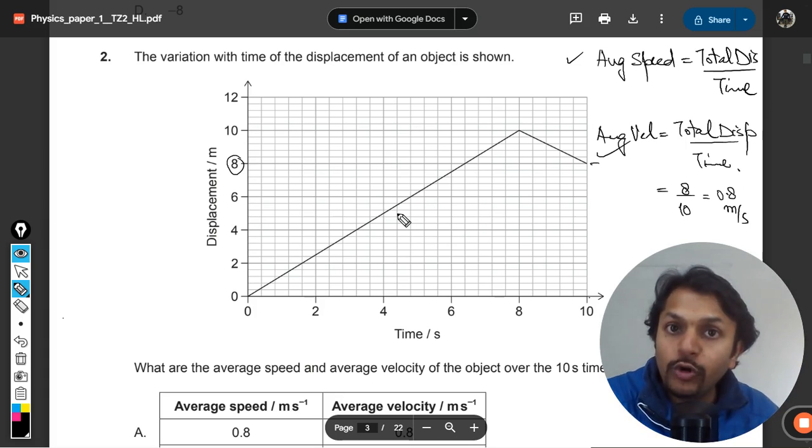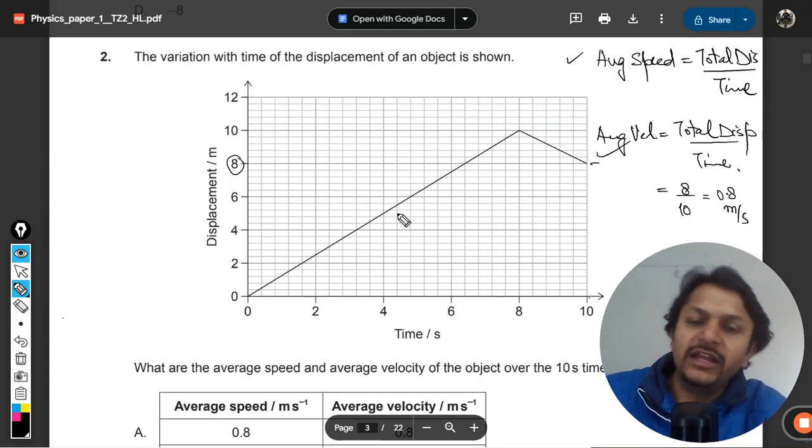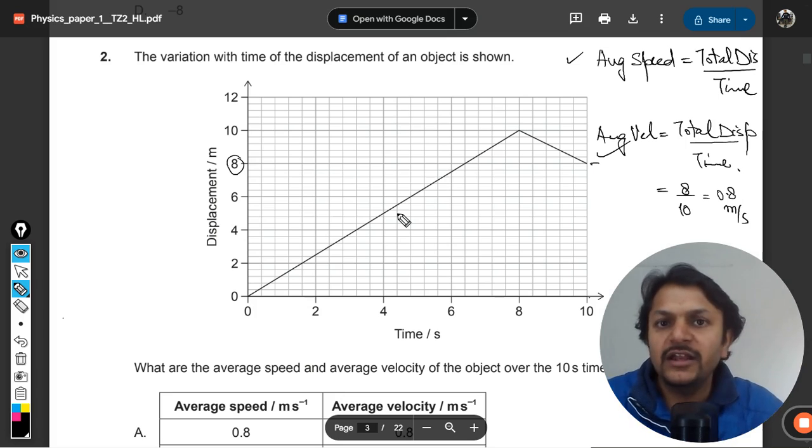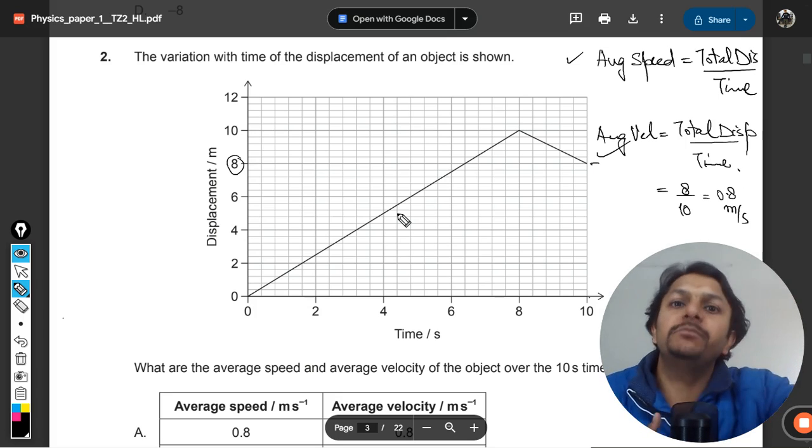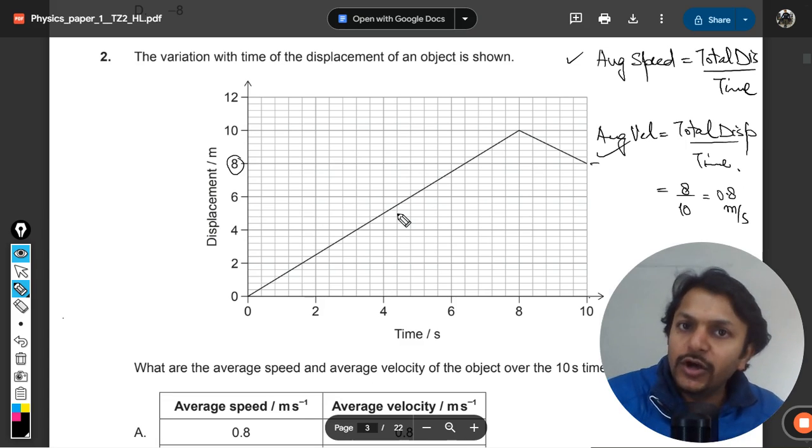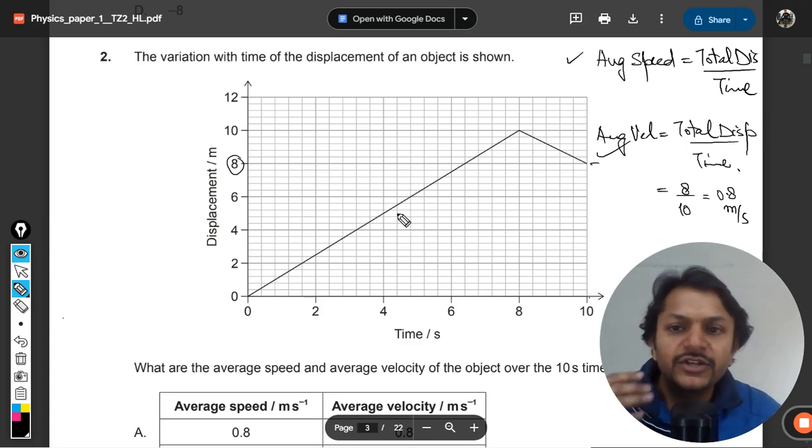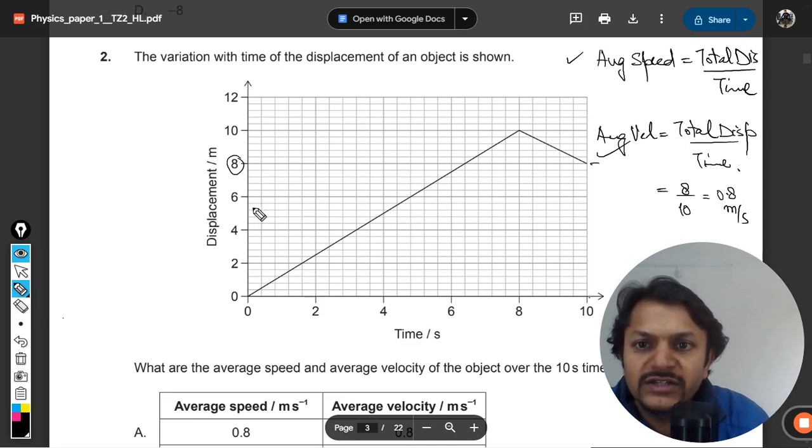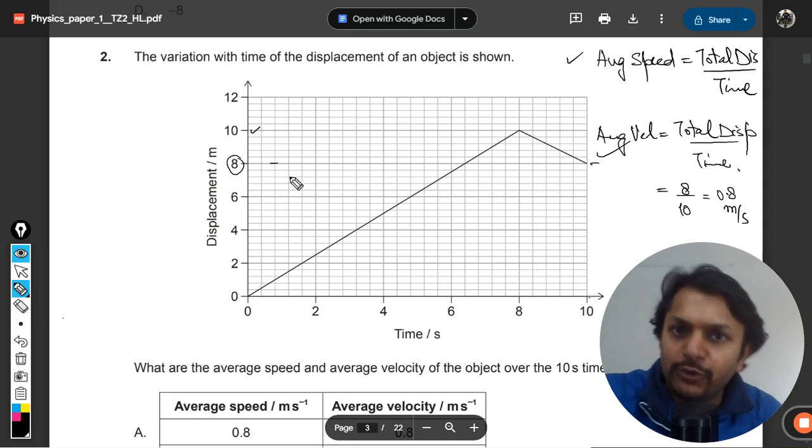You would be adding the distance when you go from home to market and then market to home. Similarly here, the body first goes up to 10 and then returns to 2, so it will be 10 plus 2, which is 12 meters total distance.